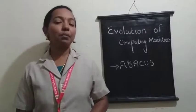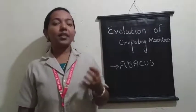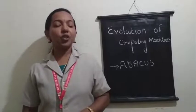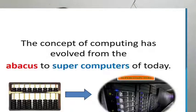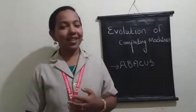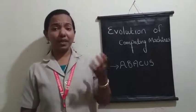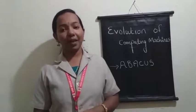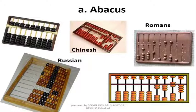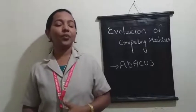Evolution of computing machines means we are going to discuss the journey of different machines — from Abacus to supercomputers, or Abacus to modern computer. Actually, Abacus is not a computer. It is used for counting purposes. Smaller children use Abacus for identifying numbers and to learn addition and subtraction. So what is the connection between Abacus and the computer? That we are going to discuss first.